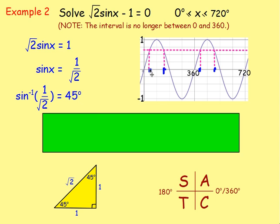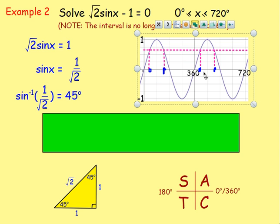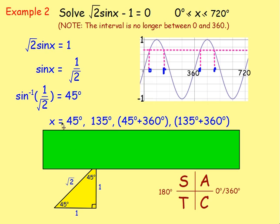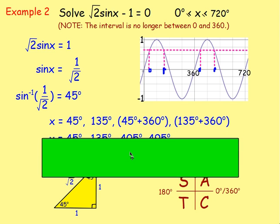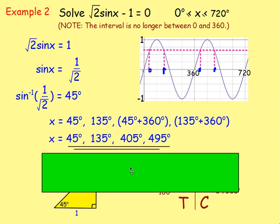You'll notice that gives you the first two answers, but you've also got the other two. Because the graph repeats every 360 degrees, you take the first two answers and add on 360 degrees to each. So the first answer is 45, the second is 180 minus 45 which is 135, and then to get the other values you add 360 onto both: 45 plus 360 and 135 plus 360. That gives you 45 degrees, 135 degrees, 405 degrees, and 495 degrees.